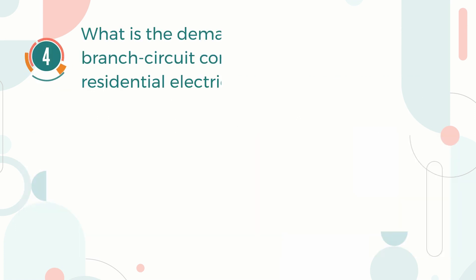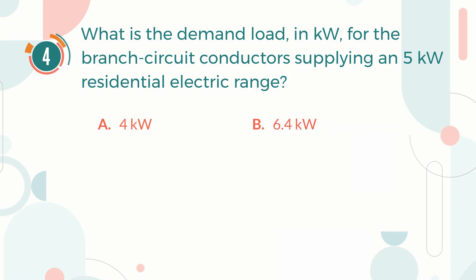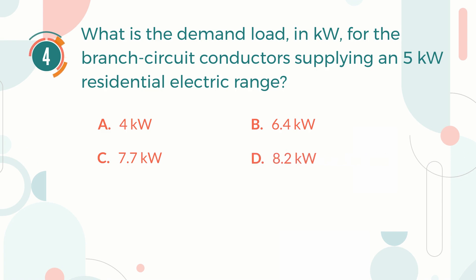Number 4. What is the demand load in kW for the branch circuit conductors supplying a 5 kW residential electric range? A. 4 kW. B. 6.4 kW. C. 7.7 kW. D. 8.2 kW.